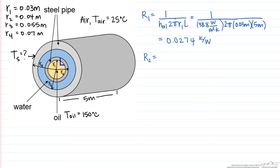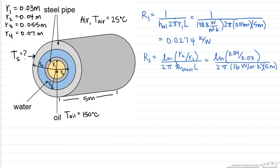R₂ is going to be a conductive resistance through that first steel wall. That is the natural log of R₂ divided by R₁, divided by 2πK — which is the thermal conductivity — times the length of the pipe. R₂ is going to equal 5.72 times 10 to the minus 4 Kelvin per watt.